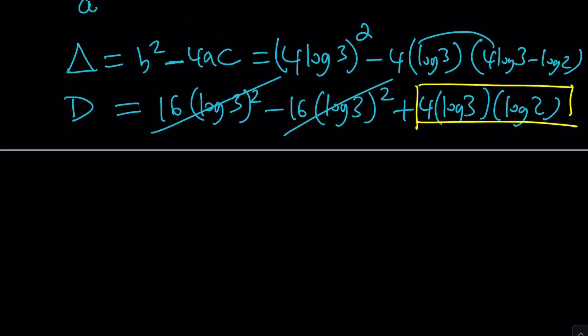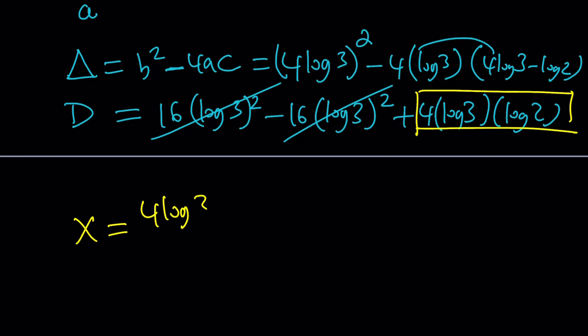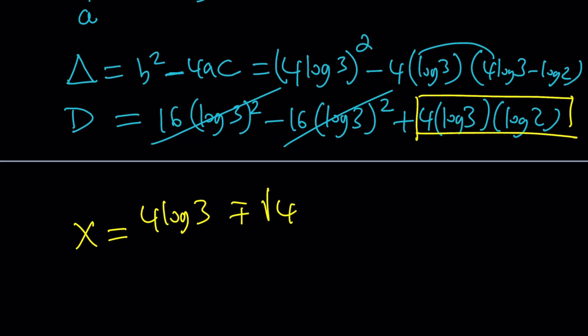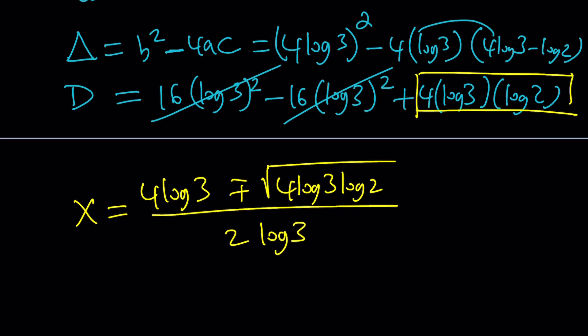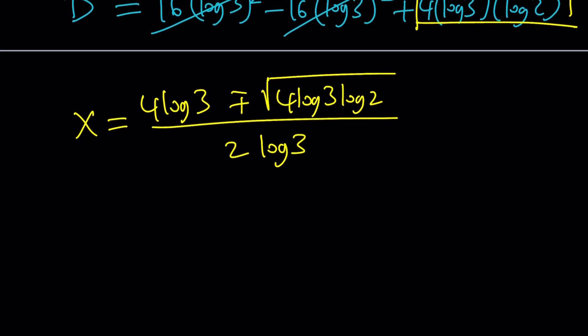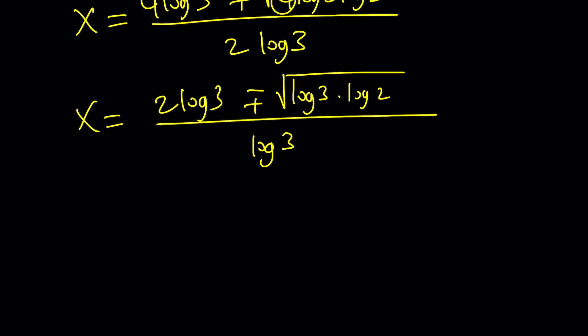So let's get back to this and use the quadratic formula on this equation. X equals negative b, which is going to be 4 log 3, plus minus the square root of delta, which is 4 log 3 times log 2. And all of that is divided by 2 times a, which is 2 log 3. Obviously, this can be simplified. One thing that I can do is take out the 4. That'll give me 2 log 3 plus minus the square root of log 3 times log 2 divided by log 3.